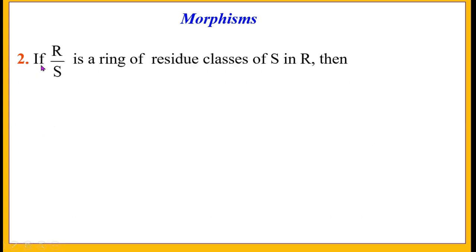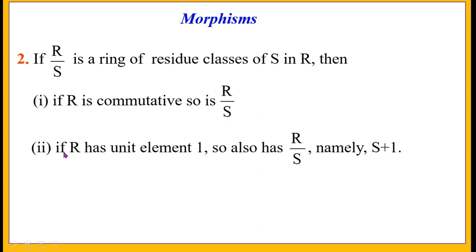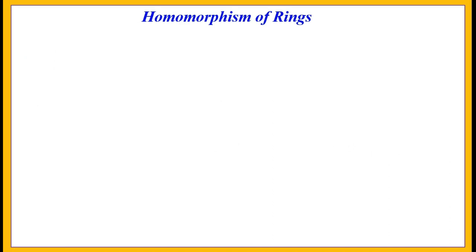If R/S is a ring of residue classes of S in R, then: first, if R is commutative, so is R/S. Second, if R has unit element 1, then R/S also has a unit element, namely S plus 1.